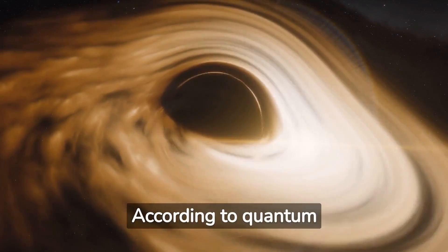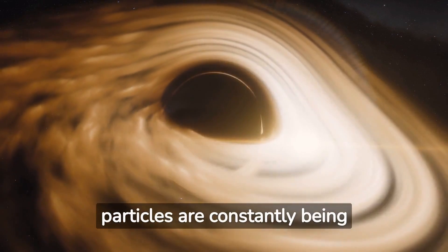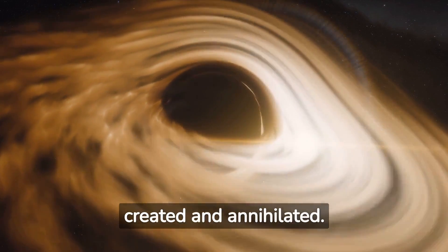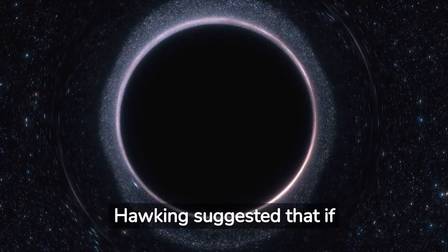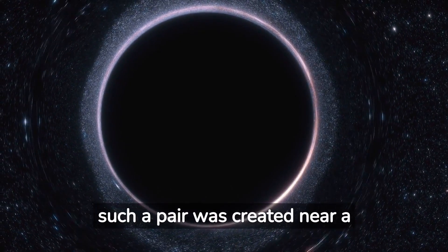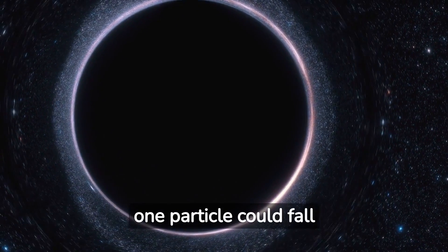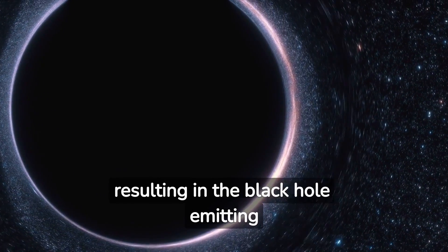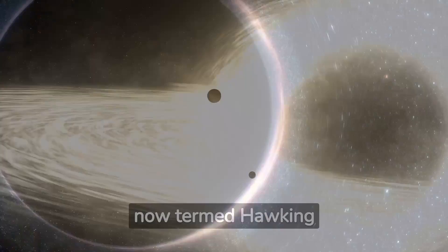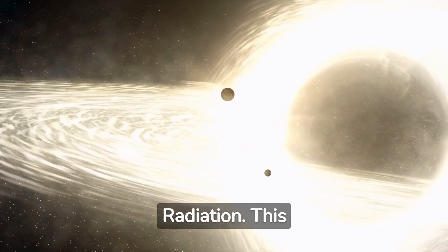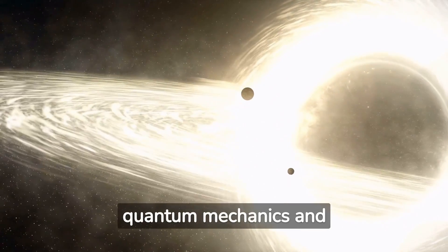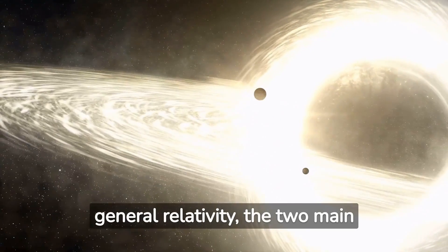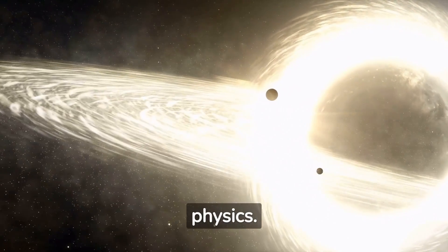According to quantum mechanics, pairs of virtual particles are constantly being created and annihilated. Hawking suggested that if such a pair was created near a black hole's event horizon, one particle could fall in while the other escaped, resulting in the black hole emitting radiation, now termed Hawking Radiation. This discovery profoundly connects quantum mechanics and general relativity, the two main pillars of contemporary physics.